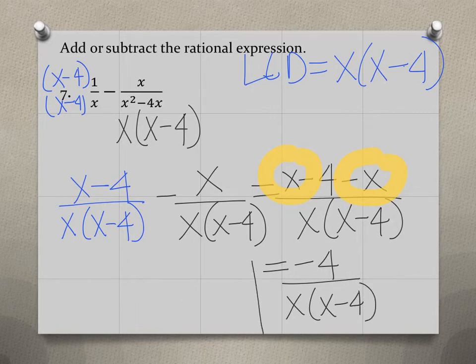So that's going to be our final answer. We can't simplify that any further. So we have now subtracted the two rational expressions. You could if you wanted to distribute the x back and get x squared minus 4x, but there's really no need to do that. So we can leave our answer like this.